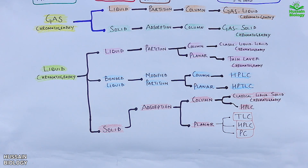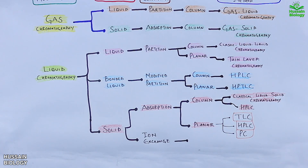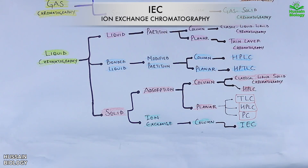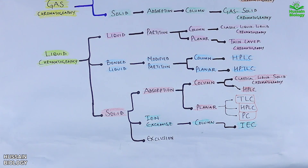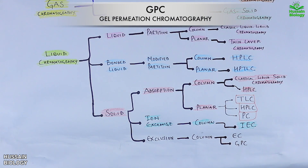The second class arising from the solid stationary phase is ion exchange, which is technically classified into column chromatography, and this method is termed IEC — ion exchange chromatography. The last class from solid stationary phase is exclusion chromatography, which is also technically classified into column chromatography, giving two methods: EC — exclusion chromatography — and GPC — gel permeation chromatography.